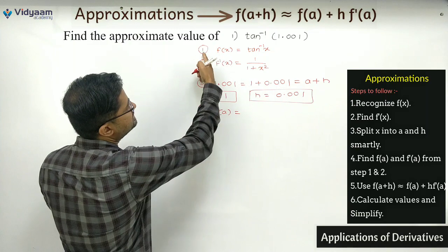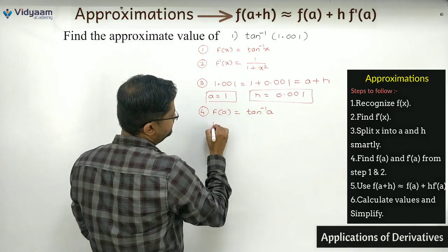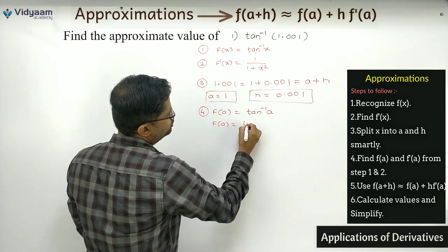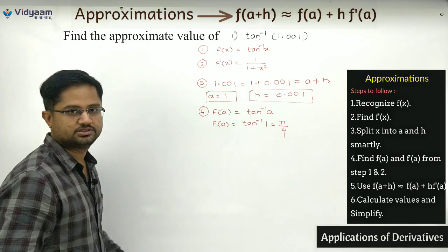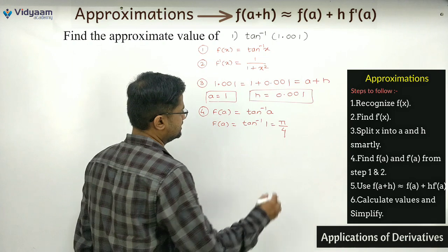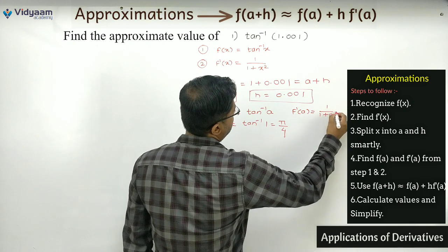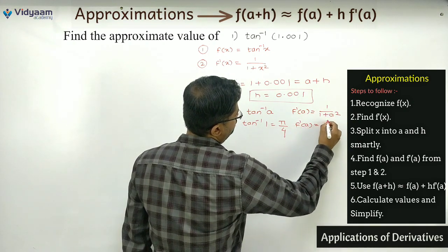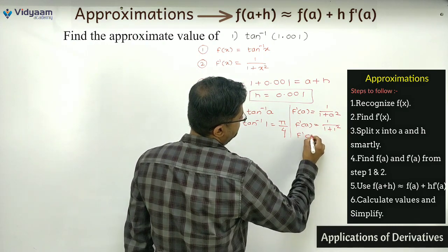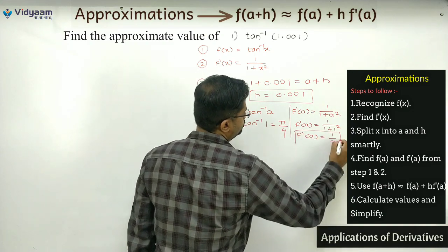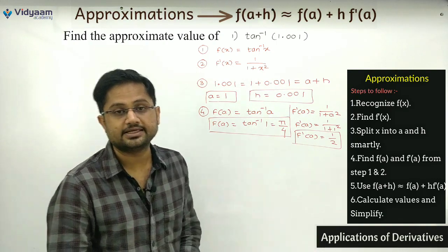First, f(a): using step 1, f(a) = tan inverse of a = tan inverse of 1, which comes out to be π/4. Similarly, f'(a) = 1 upon (1 + a²) = 1 upon (1 + 1²) = 1/2. So f'(a) = 1/2 and f(a) = π/4 — both values are ready.